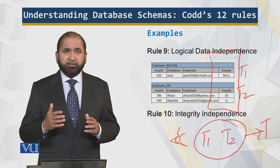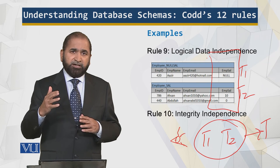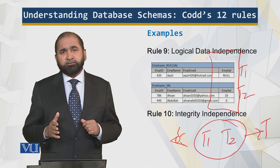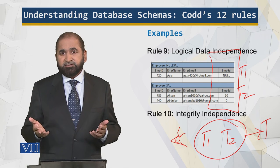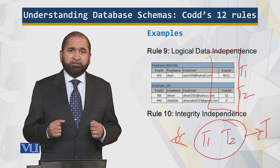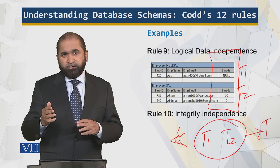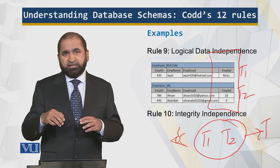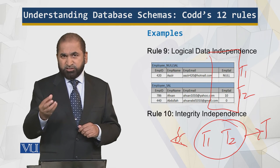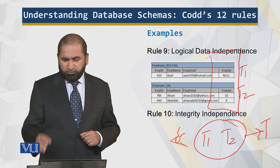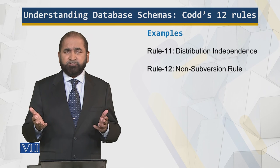Integrity independence means, for example, if I try to add an employee in department number 50 and department 50 does not exist, that should generate an error. There should be no shortcut or other way to insert that employee into a department that does not exist — that would be a violation. That is the core spirit of the relational model.